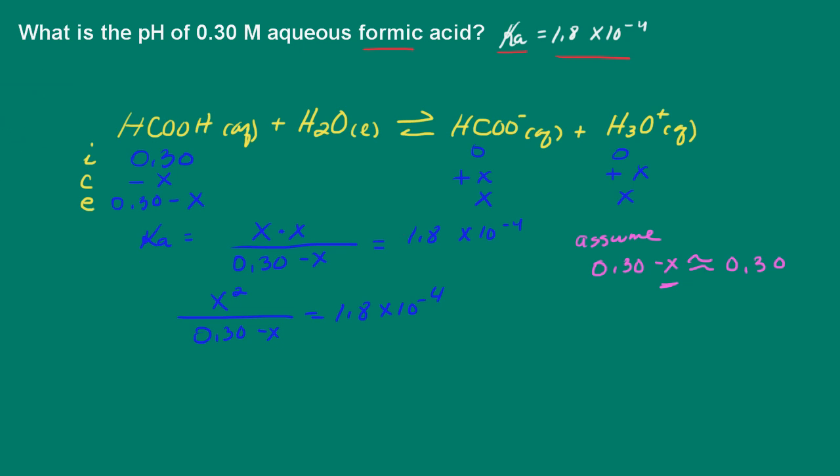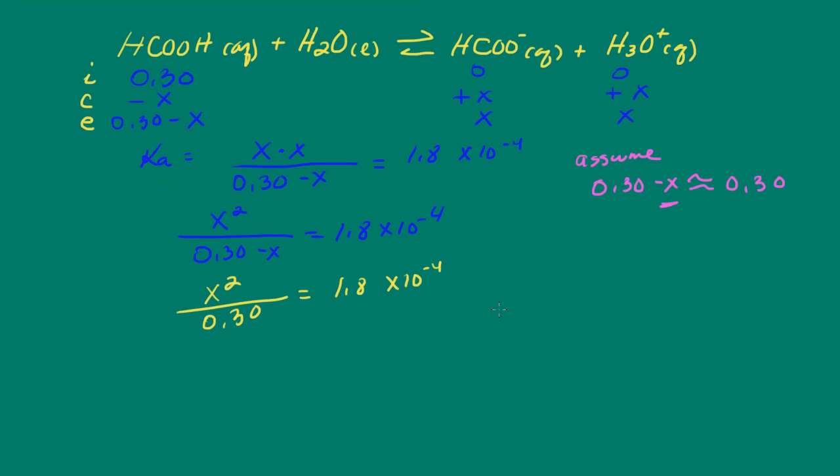So let's go ahead then and rewrite our expression here. So this simplifies then to X squared over 0.3 equal to 1.8 times 10 to the negative 4. What I want to do here now is solve for X.